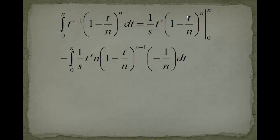And here on the right hand side we have the first part of the partial integration. We took this and integrated it which gave us 1 over s multiplied by t to the s. And here this bracket expression didn't change because this will be differentiated later on. And the boundaries are n and zero.